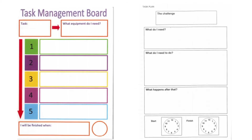On this slide, we can see an example of a task management board. In the top left corner we have 'what is the task?' In the top right corner, 'what equipment is needed?' as well as the steps. We also have the challenge — showing what's expected — and then thinking about what do I need to do and what happens after that.